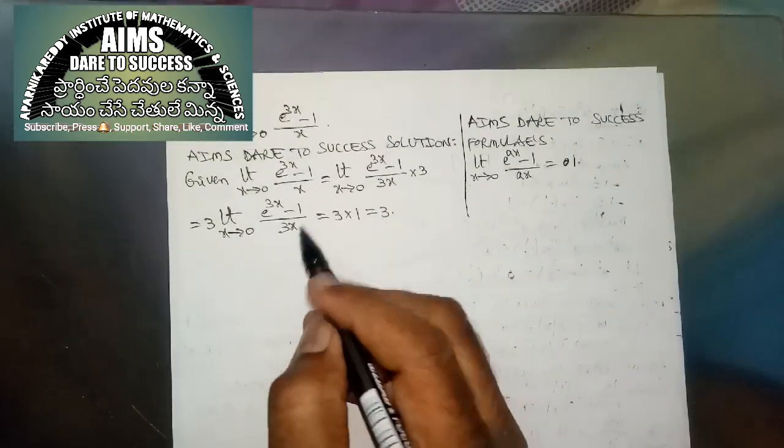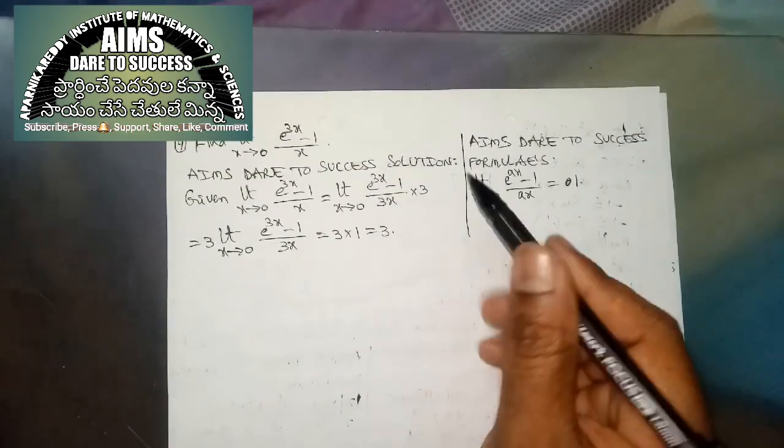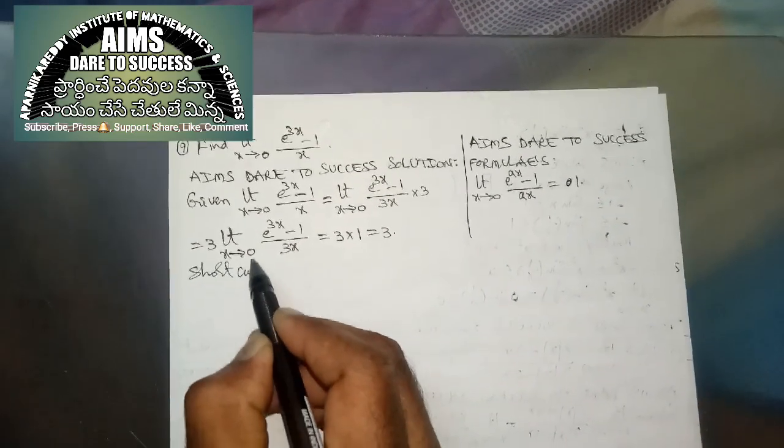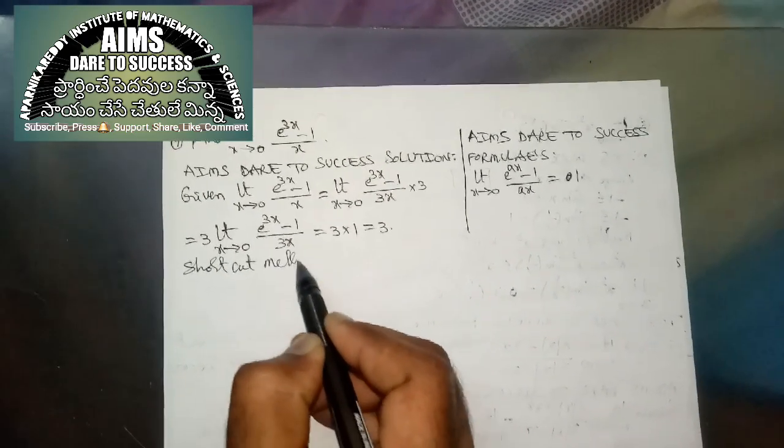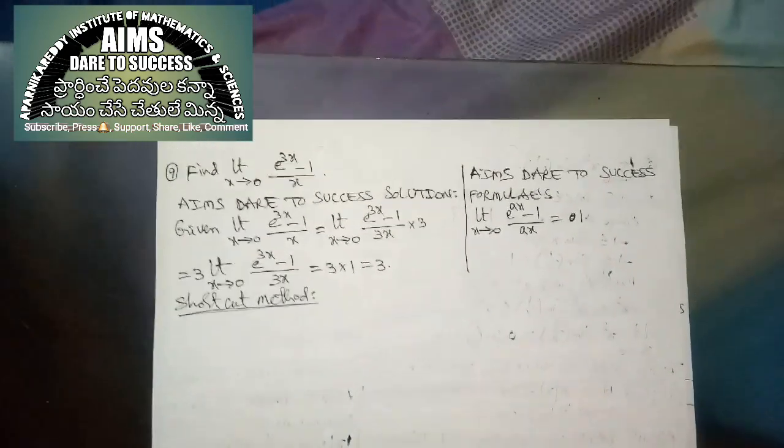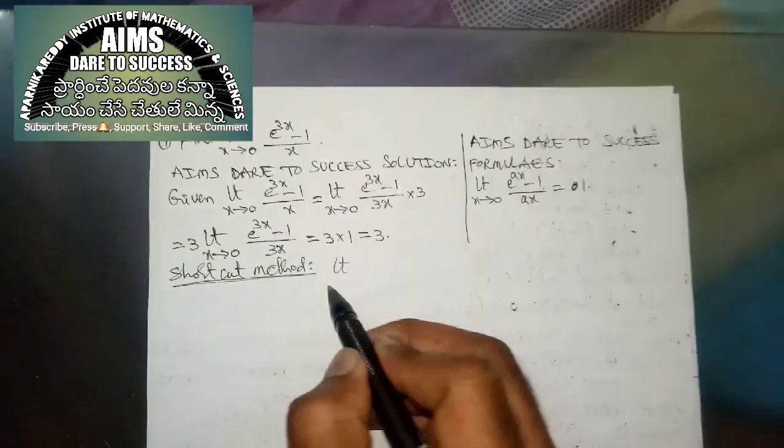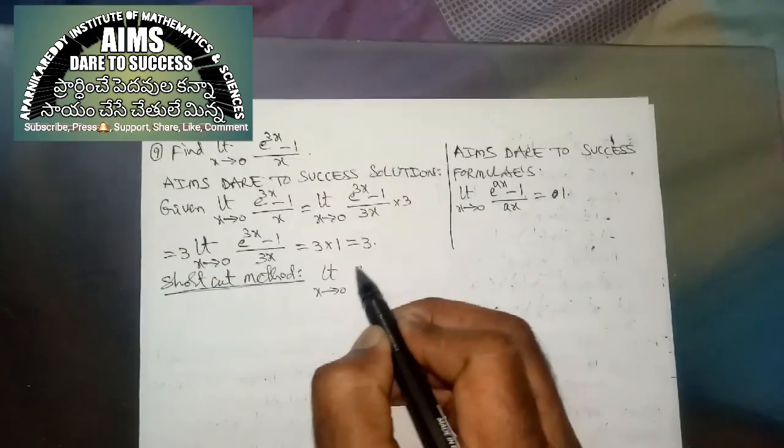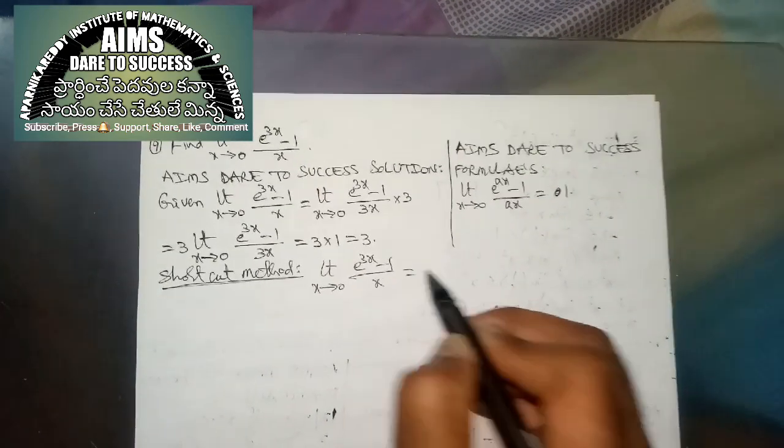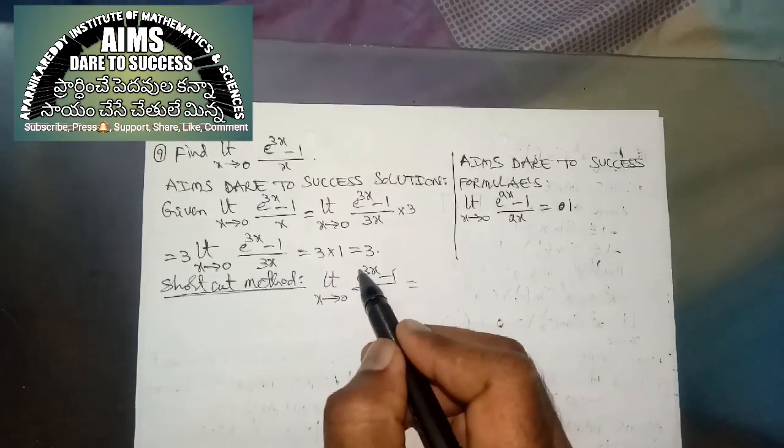My dear friends, if you find this method difficult, I want to explain the shortcut method. Limit x tends to 0, e power 3x minus 1 by x is equal to the question. In the power, x value is 3. That is the answer.